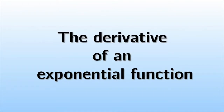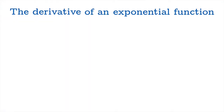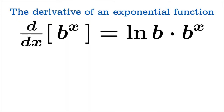In this video we're going to discuss the derivative of an exponential function. The derivative of the exponential function b to the x is ln(b) times b to the x. ln(b) is our notation for the logarithm base e, or what is known as the natural logarithm.